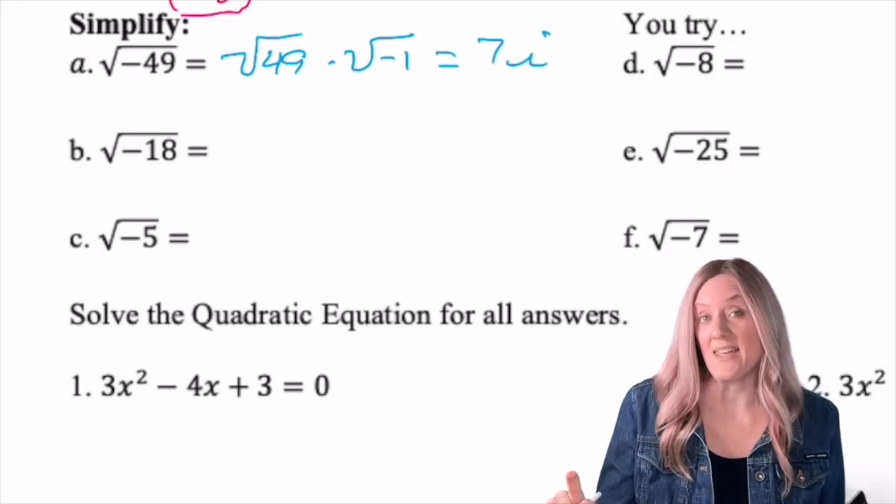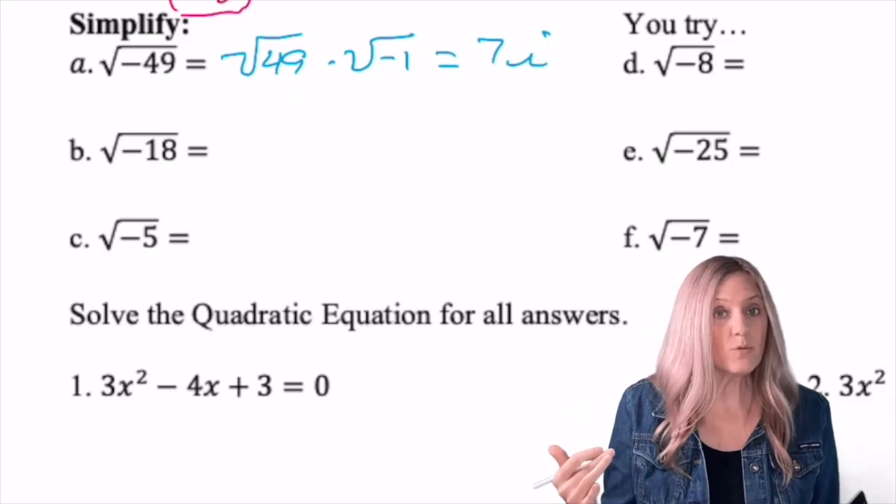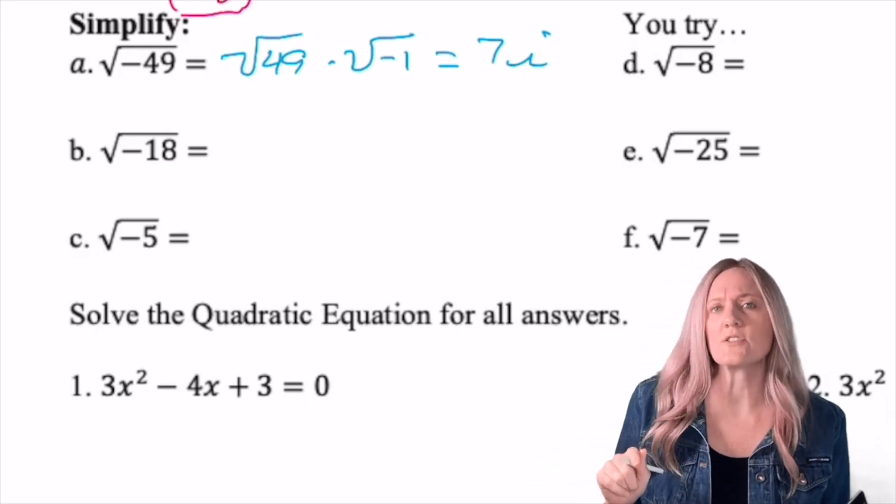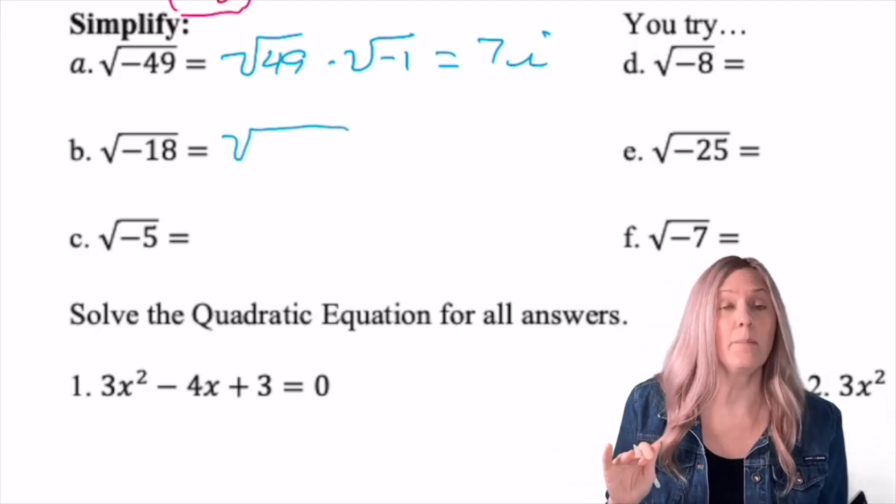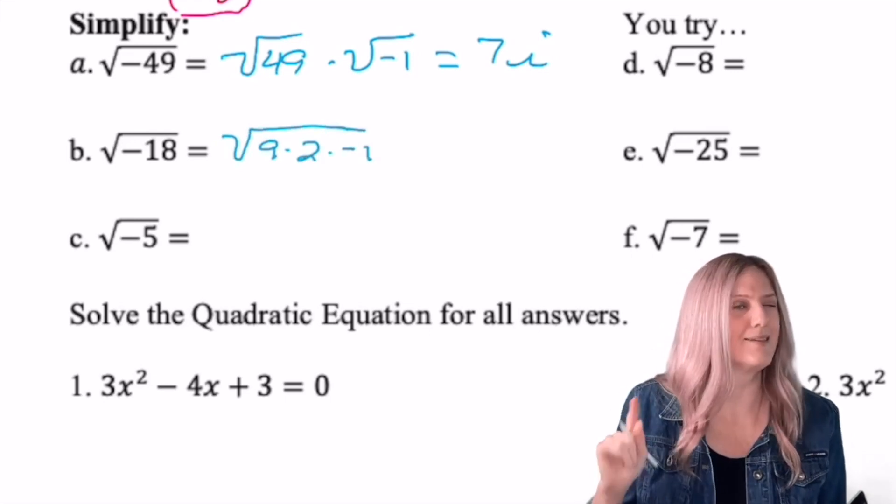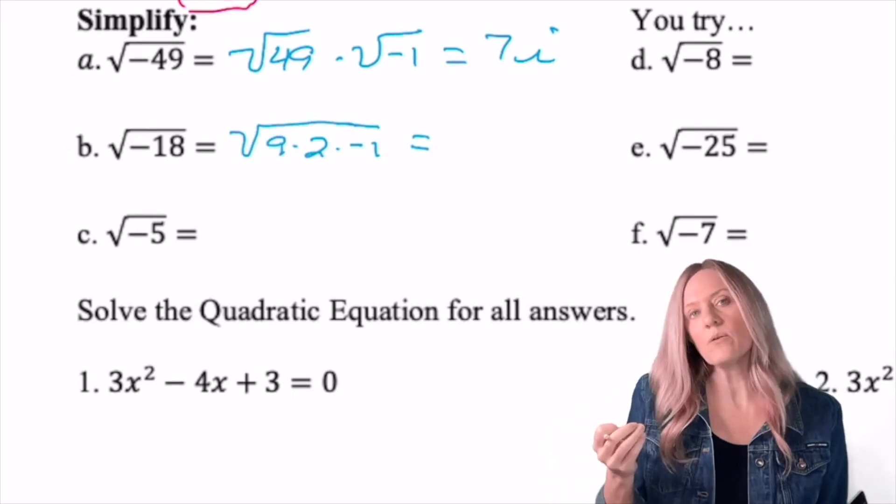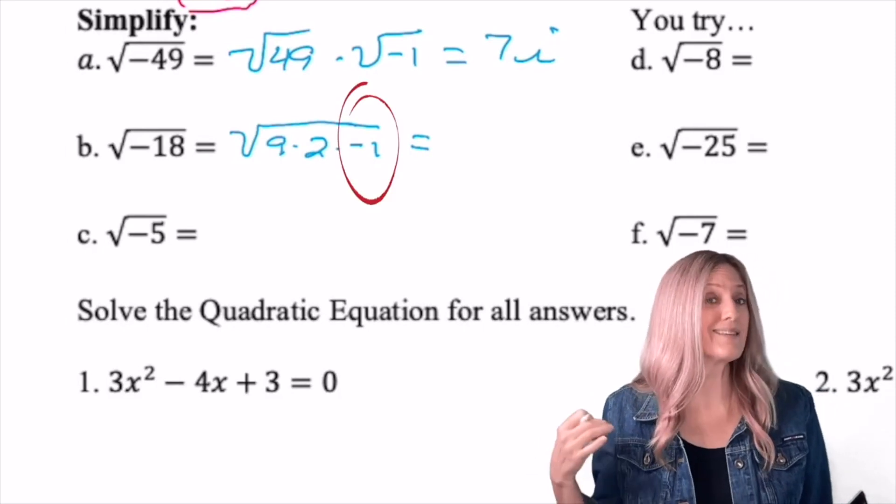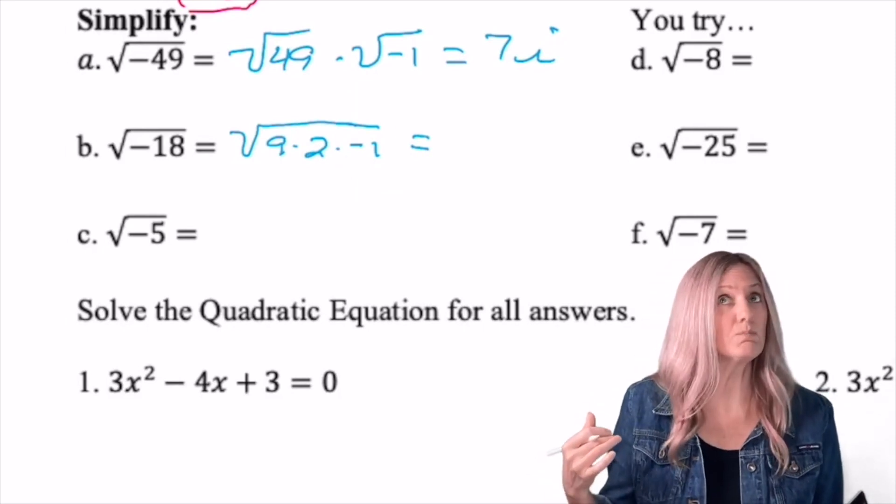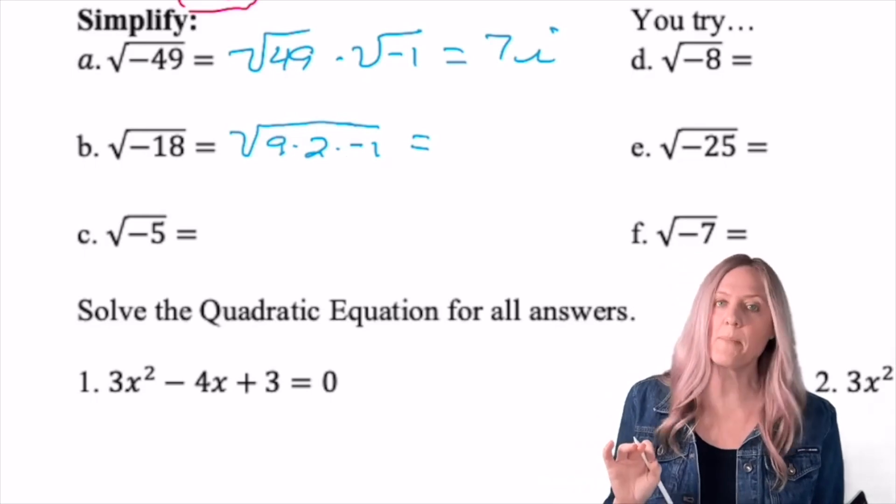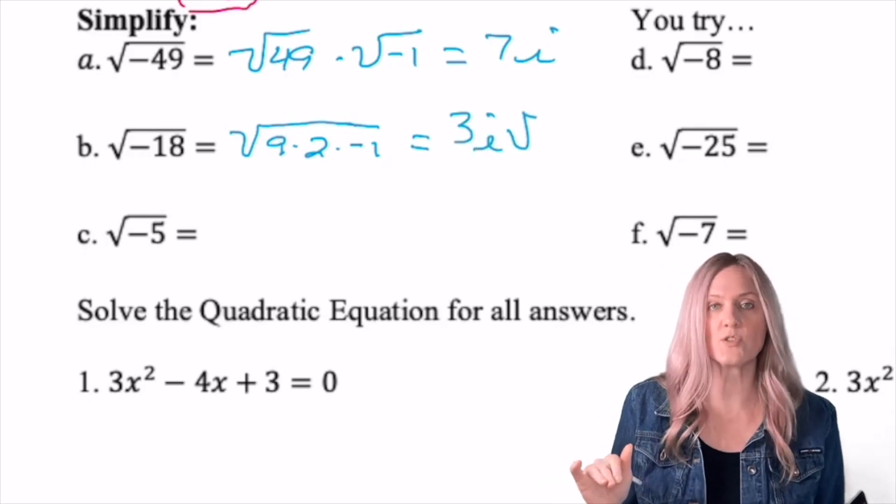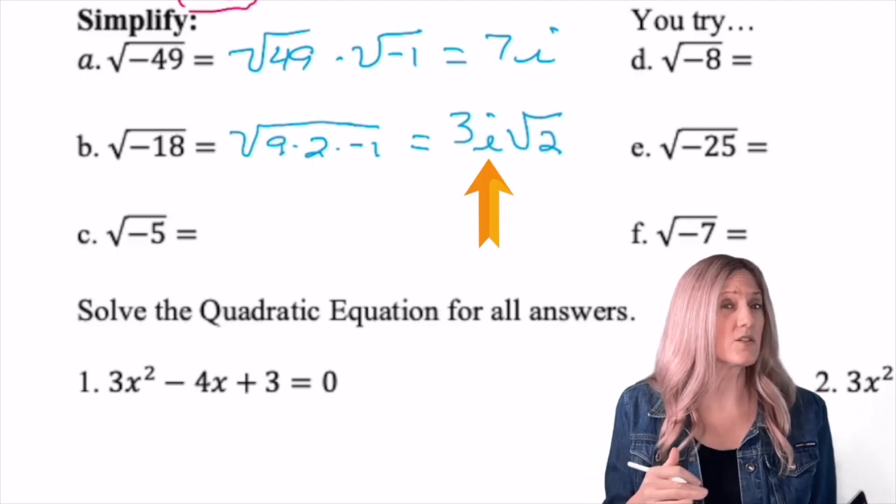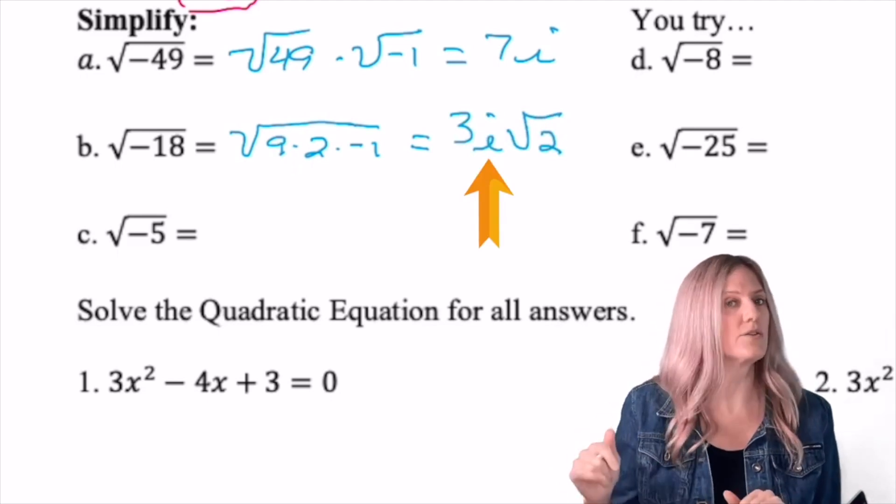Look at B. Same idea. We know we have a square root of negative one in there. But now 18, perfect squares. So three times six doesn't help. But how about nine times two? Yes. Think through what comes outside the radical now. Square root of nine is three. Square root of negative one is i. Square root of two is square root of two. So the proper way to write this is 3i√2. Really important to pull that i next to the three so it does not look like it's under the radical.